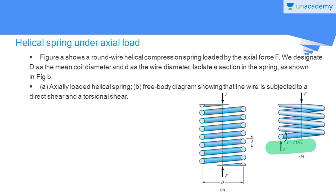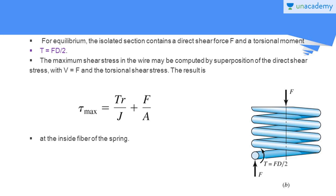Now we will see what types of stresses and their magnitudes are developed at this cross-section of the spring wire. For equilibrium, the isolated section contains a direct shear force F and a torsion moment T = FD/2. The maximum shear stress in the wire may be computed by superposition of the direct shear stress (V = F) and the torsional shear stress. The total shear stress is given by τ_max = Tr/J + F/A, where Tr/J is the stress created by the torsional loading at the cross-section.